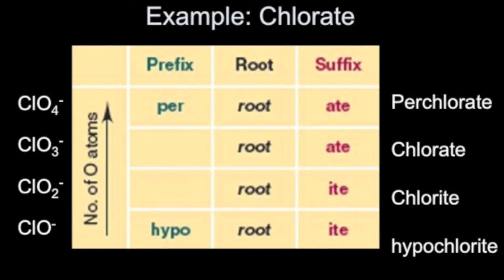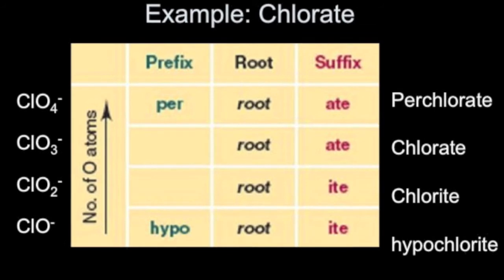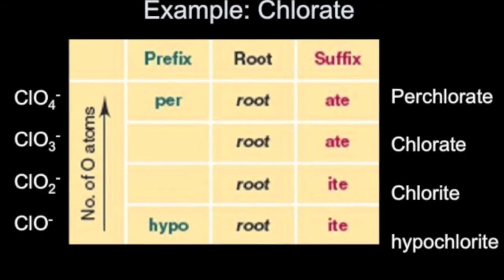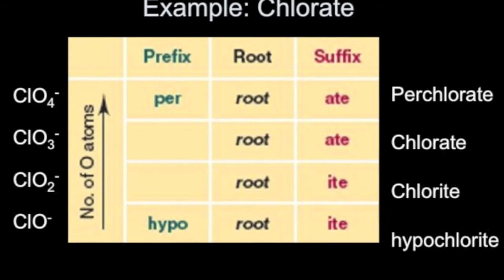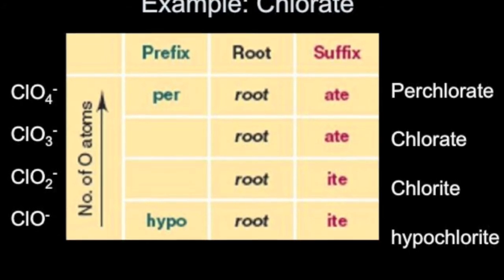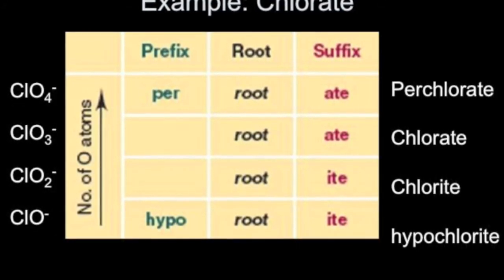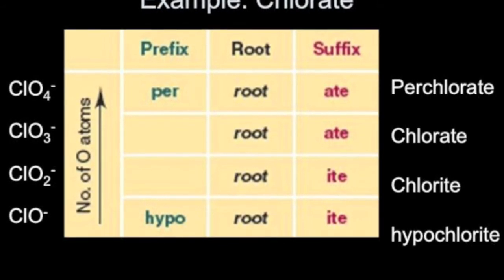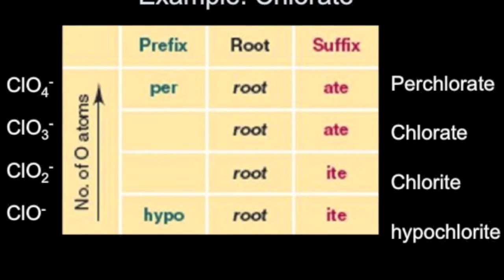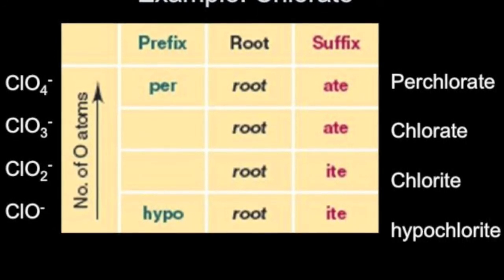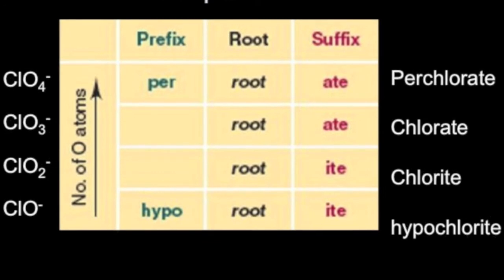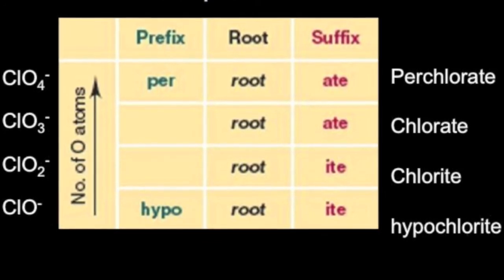If we add one more oxygen to make it ClO4 minus, we call that the perchlorate ion. The chlorate is ClO3 minus. If we reduce that to ClO2 minus, we change the ending to '-ite,' making it the chlorite ion. Reduce it again to just one oxygen — ClO minus — and we call that the hypochlorite ion. Notice that all we're doing is changing the number of oxygens; the charge stays the same. By memorizing this naming convention and the root '-ate' ions, we can work outward based on the number of oxygens.